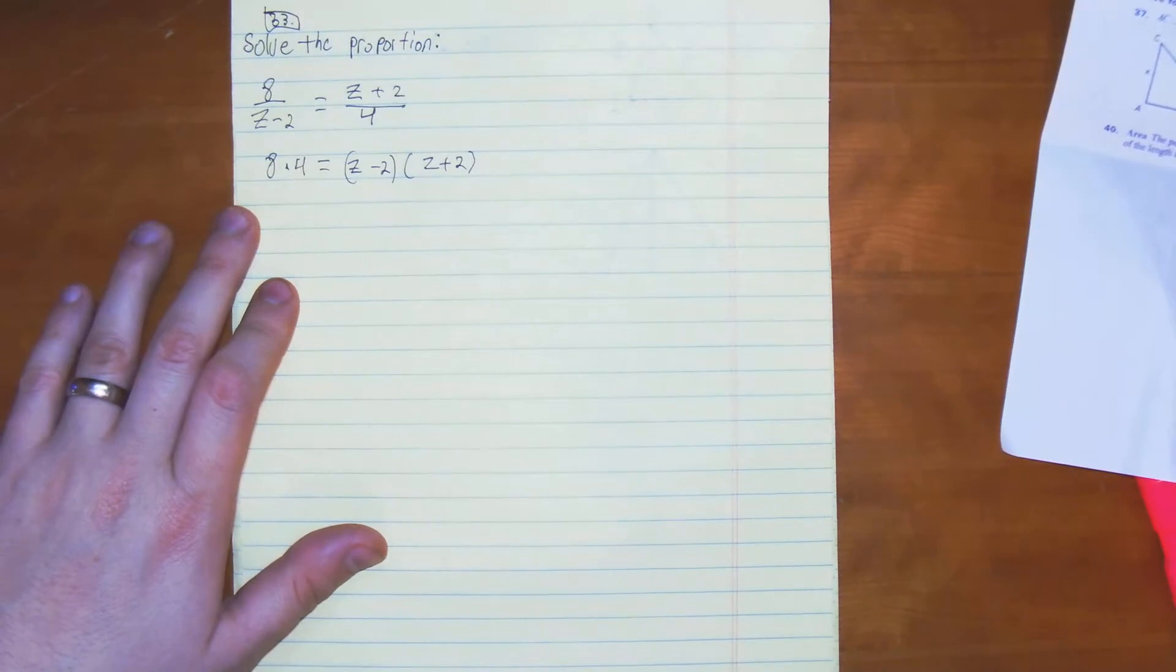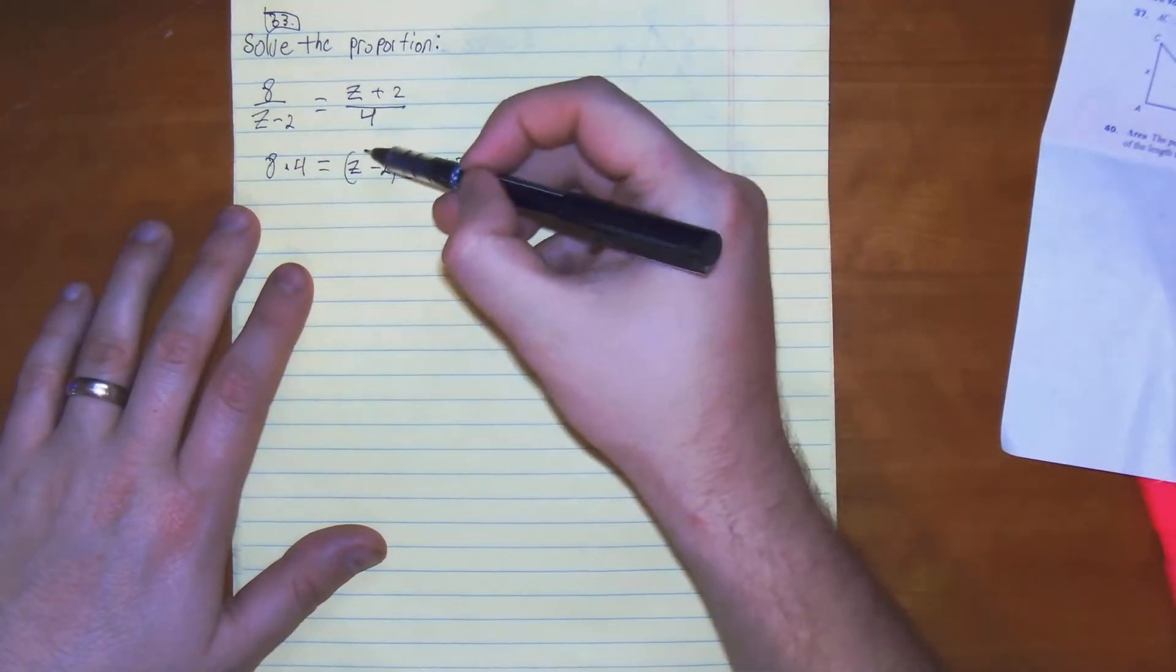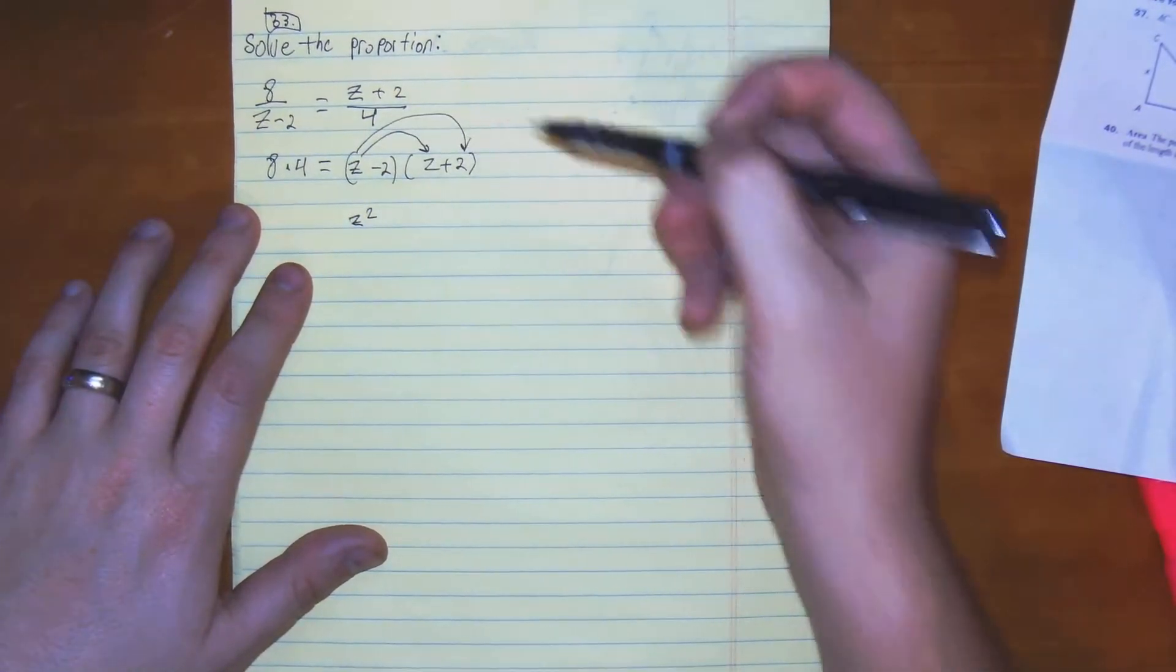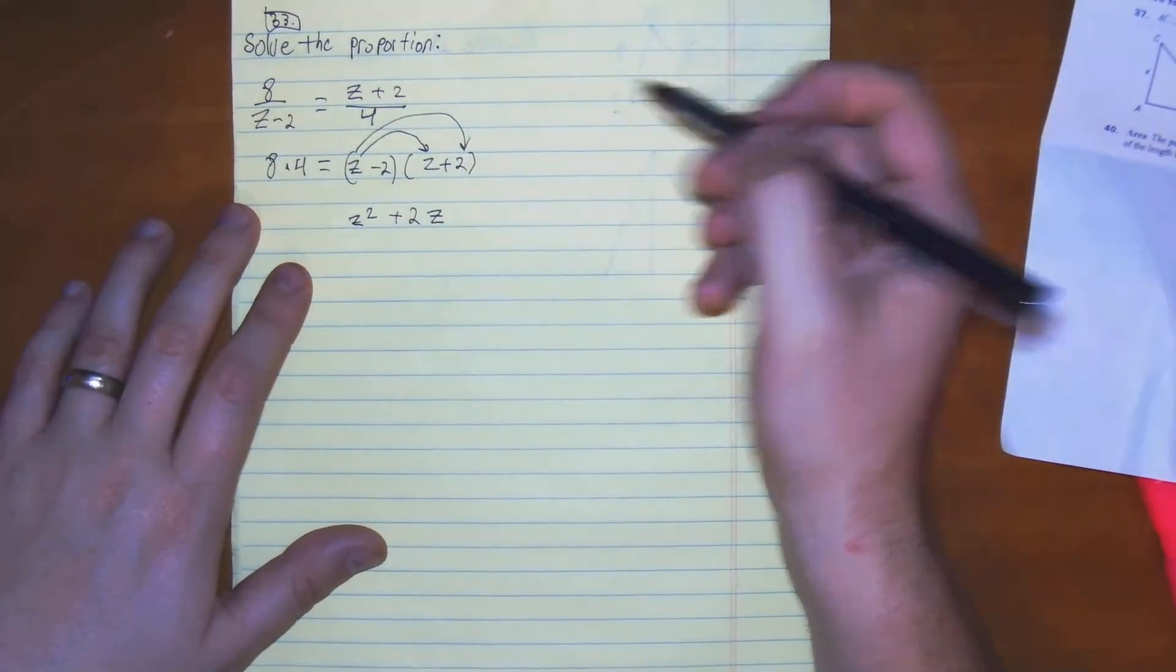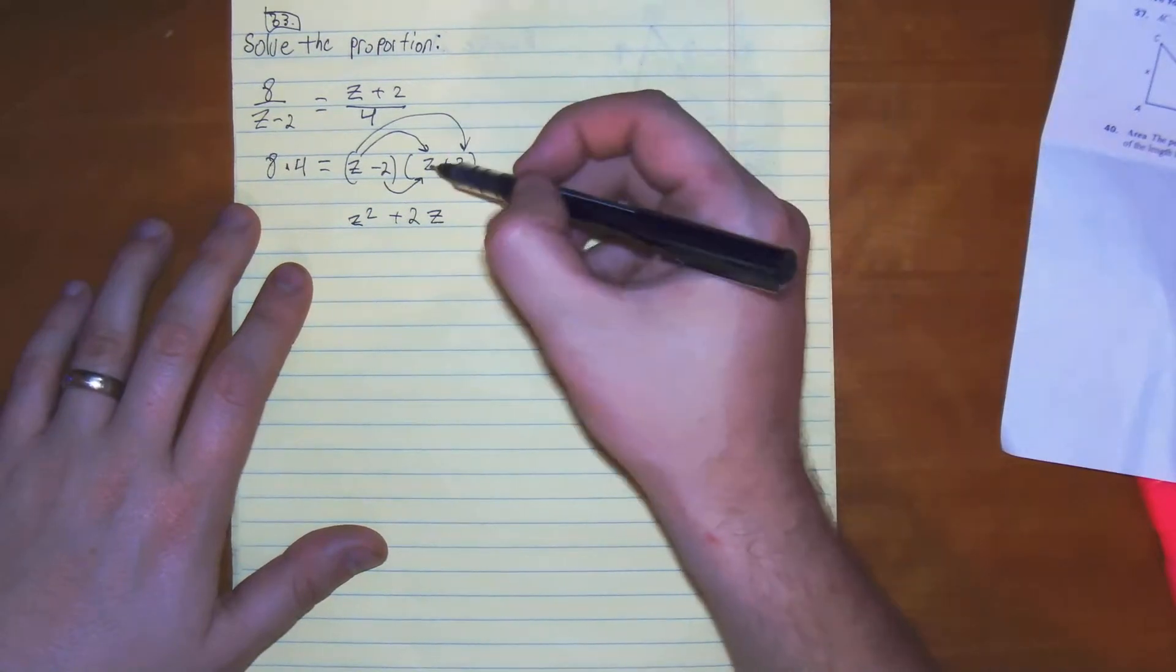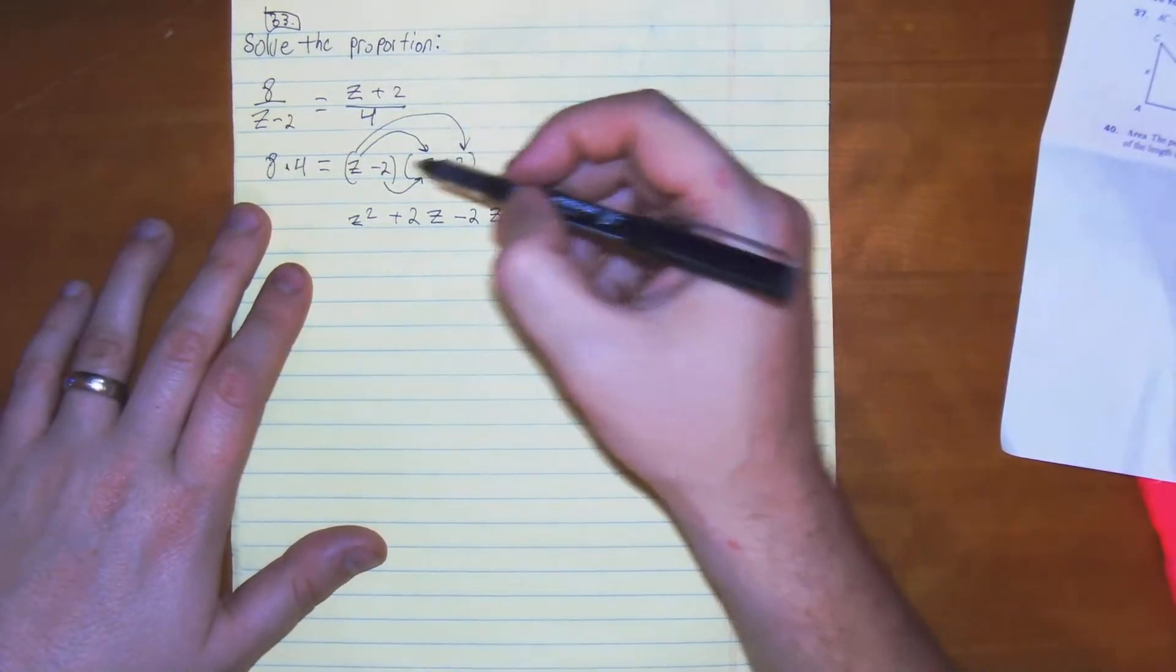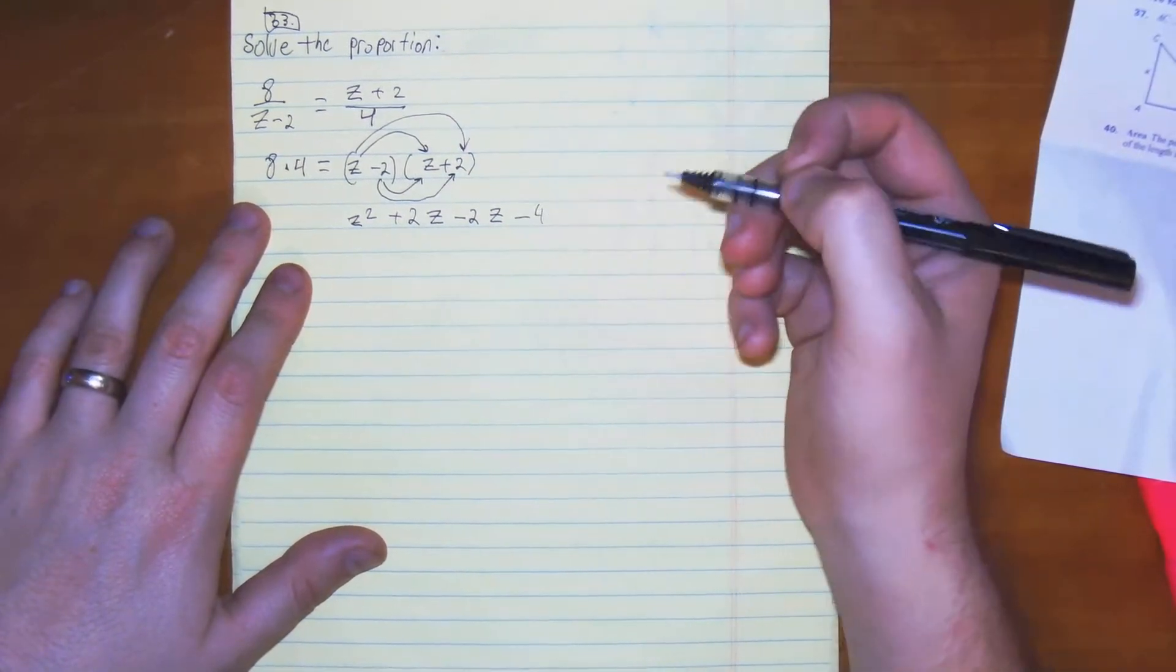From here, we need to distribute or FOIL, whatever makes you feel comfortable, same thing. z times z gives you z squared. Then z times 2 gives you plus 2z. Then negative 2 times z gives us negative 2z. And finally, negative 2 times negative 2 gives us negative 4.